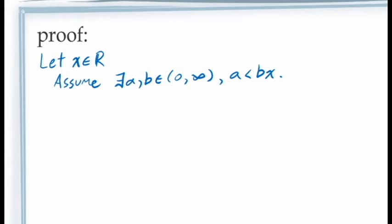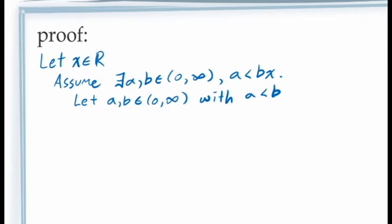Since we are told that values of a and b exist satisfying this inequality, but we are not told what those values are, all we can do is introduce a and b into our proof as unknown constants. We do this by making a statement along the lines of: let a and b be elements of the interval from 0 to infinity satisfying the inequality a is less than b times x. Remember that we are not allowed to assign specific values to a and b, because while our assumption tells us that values exist satisfying this inequality, it doesn't tell us what those values are, and so the values of a and b must remain unknown.